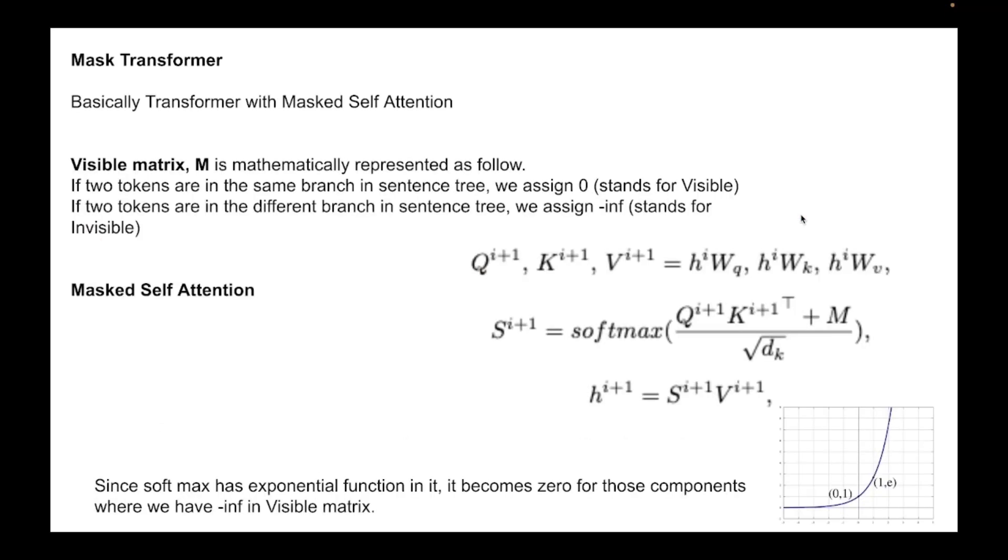And the final piece is the mask transformer. So mask transformer is basically the transformer with masked self-attention. So we have the visible matrix and we treat that as the mask. So mathematically this visible matrix is defined as follows: if two tokens are in the same branch in the sentence tree we assign zero which stands for visible, they are allowed to see each other. And if two tokens are in different branches in the sentence tree we assign negative infinity which stands for invisible or they are not allowed to interact with each other.